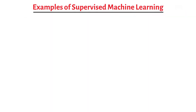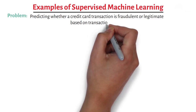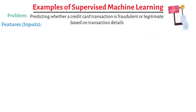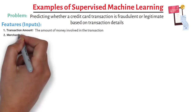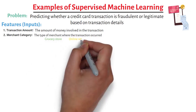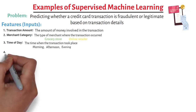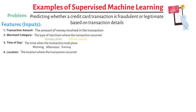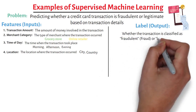Another example of supervised learning — Problem: Predicting whether a credit card transaction is fraudulent or legitimate based on transaction details. Features — inputs: 1. Transaction amount: The amount of money involved in the transaction. 2. Merchant category: The type of merchant where the transaction occurred, for example, grocery store or online retailer. 3. Time of day: The time when the transaction took place, for example, morning, afternoon, or evening. 4. Location: The location where the transaction occurred, for example, city or country. Label — output: Whether the transaction is classified as fraudulent (fraud) or legitimate (legit).